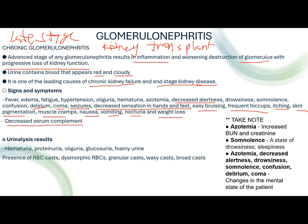There would also be decreased serum complement. Urinalysis results include hematuria, proteinuria, oliguria, glucosuria, foamy urine, RBC casts, dysmorphic RBC, granular casts, waxy casts, and broad casts. Azotemia means the patient's blood urea nitrogen (BUN) and creatinine are increased. Somnolence is a state of drowsiness or sleepiness. When a patient has chronic glomerulonephritis, even the mental state is affected — decreased alertness, confusion, delirium, and worst case, coma.